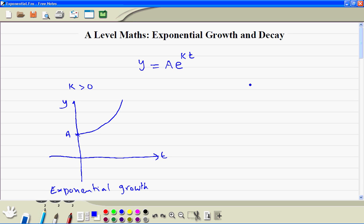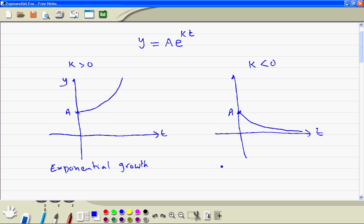If k is less than 0, here again the t starts from 0. When t is 0, y is equal to A. This time because k is negative, so it is exponential decay. So the curve looks like this, goes down, never touch this line. This is exponential decay.